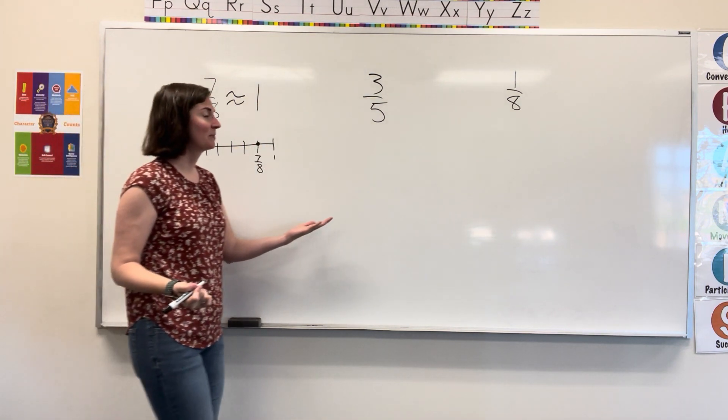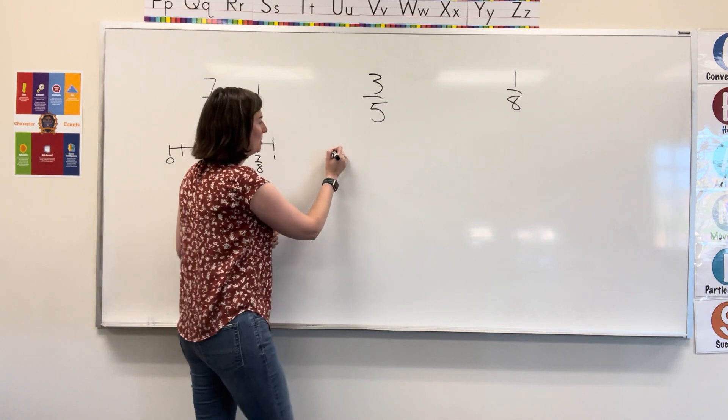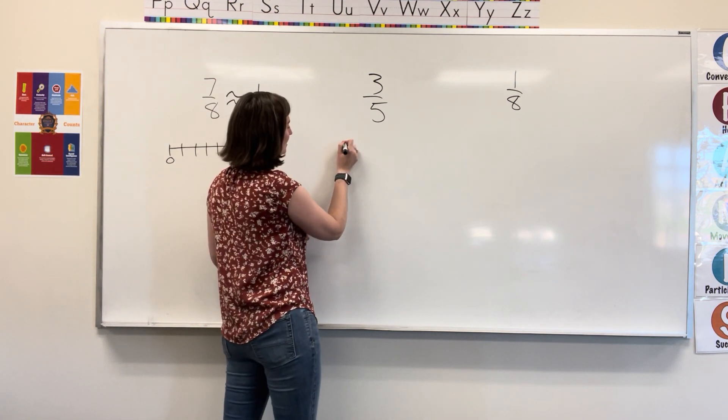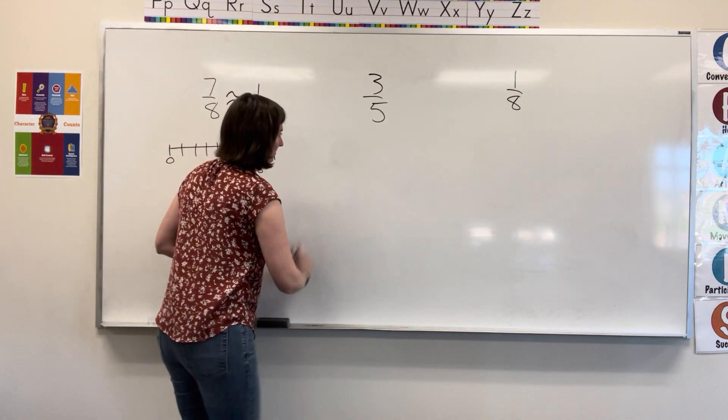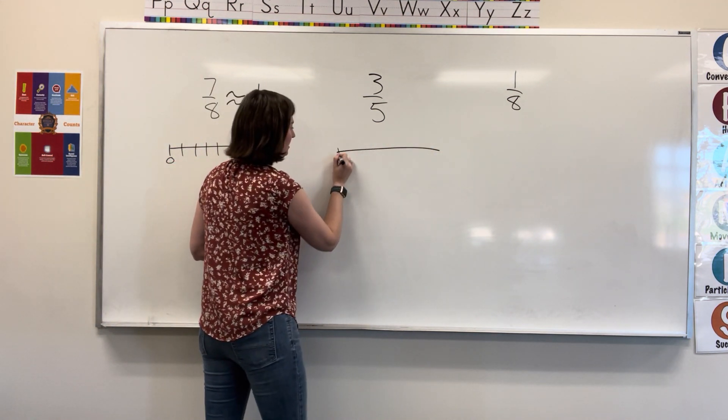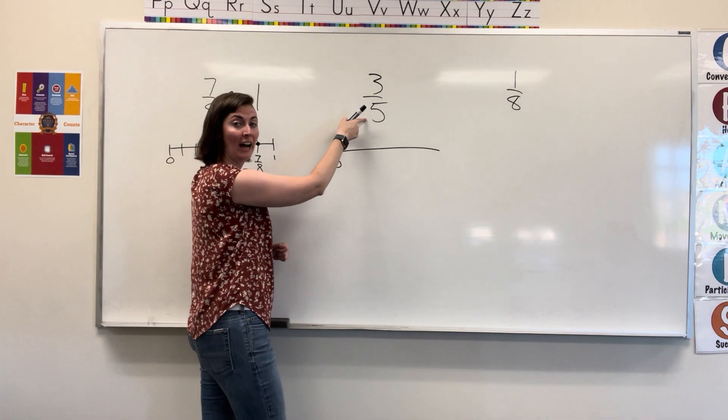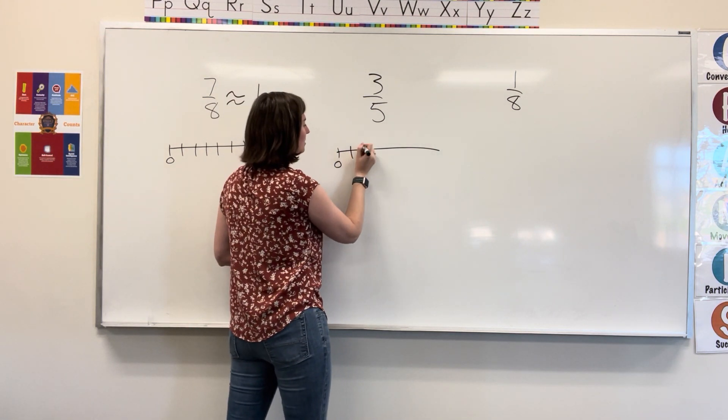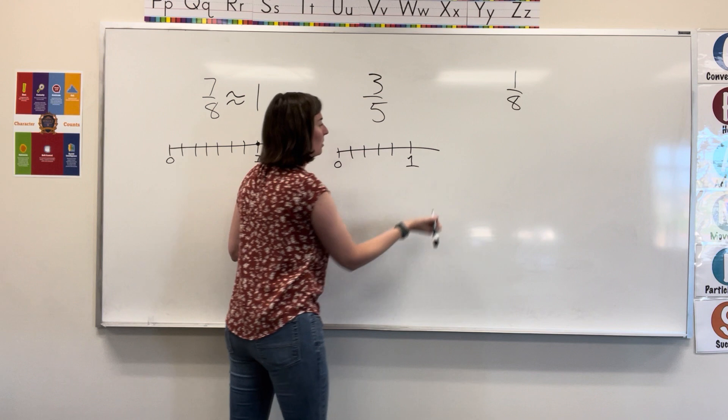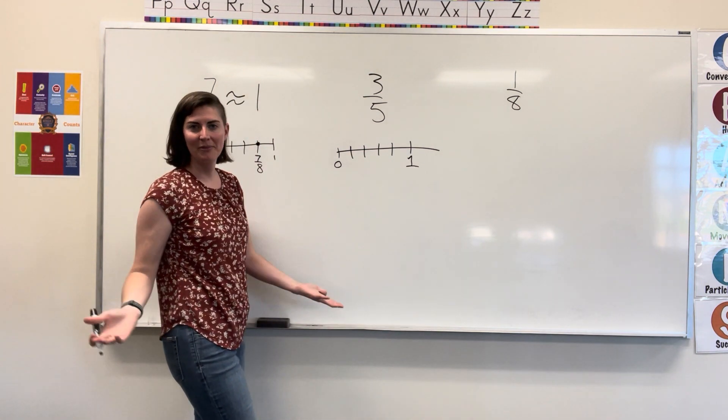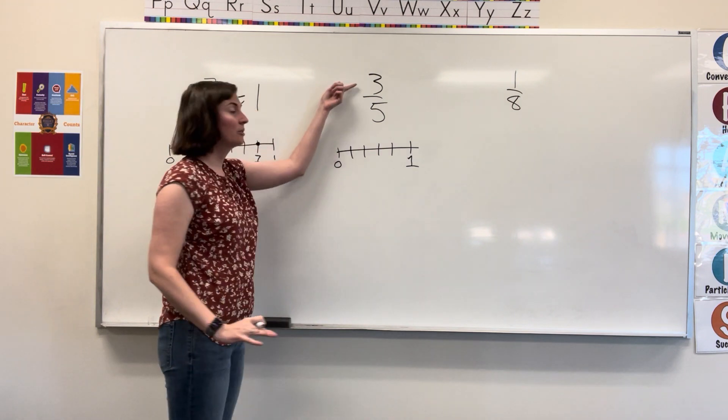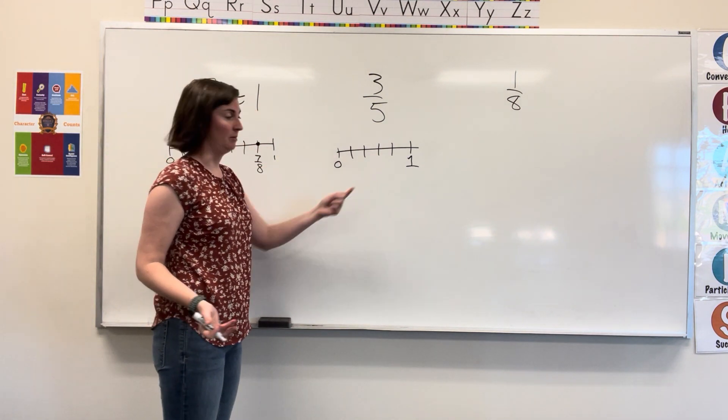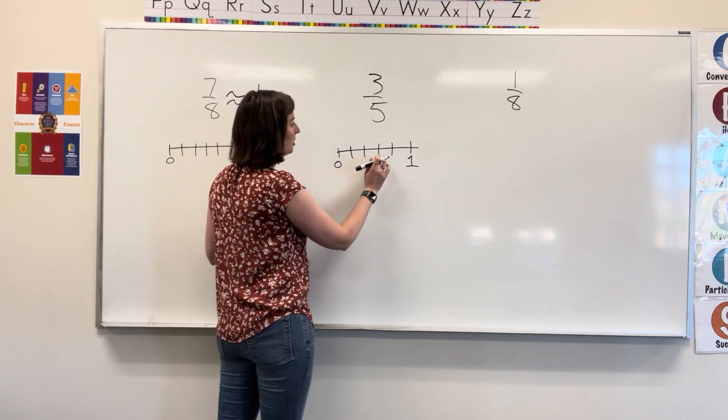Let's look at another example. Three fifths. We're going to make a really quick number line starting at zero. Draw my line first, starting at zero. Five parts. One, two, three, four, five. Now, this is my one whole. I have a little extra. That's okay. Now, I'm going to count three parts of this number line. One, two, three.